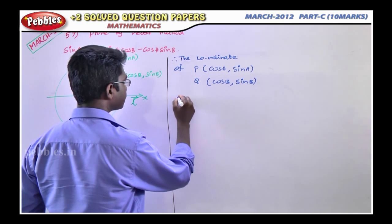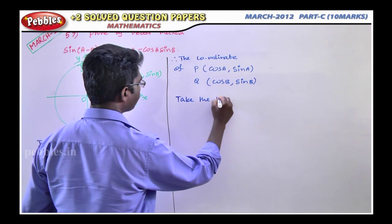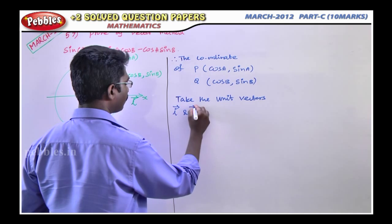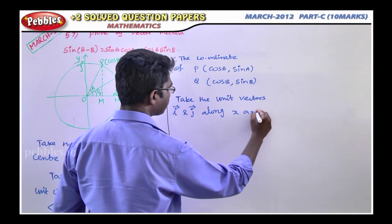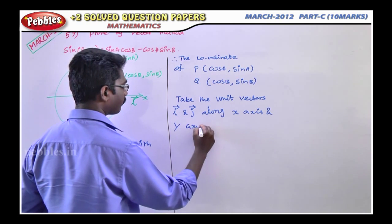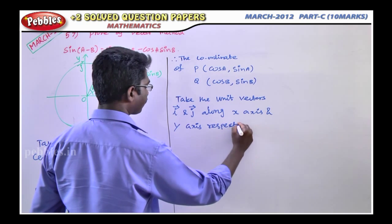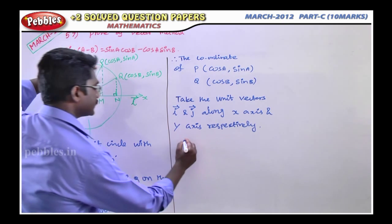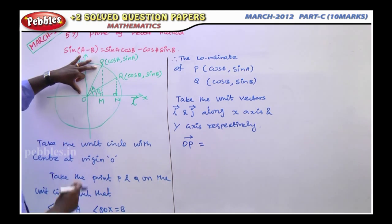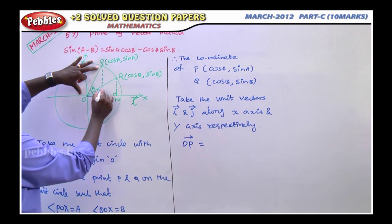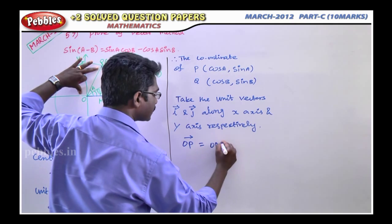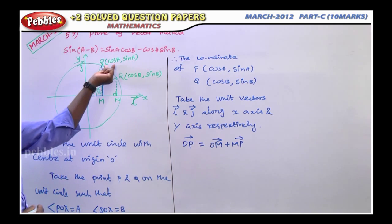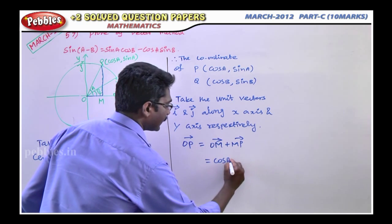Take unit vectors i-vector and j-vector along x-axis and y-axis respectively. The OP vector equals OM plus MP. OM value is the x-value of point P, which is cos A, in the i-vector direction along the x-axis. Therefore OM vector equals cos A times i-vector.